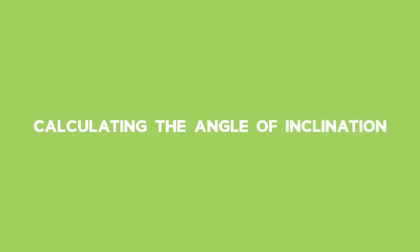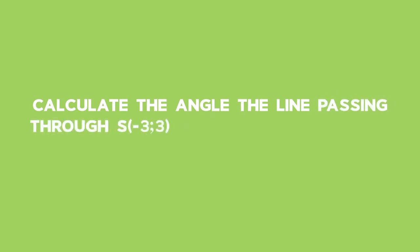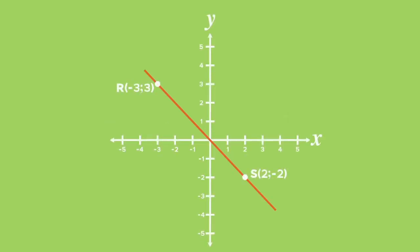Example 1: Calculating the angle of inclination. Calculate the angle the line passing through the points S(-3, 3) and R(2, -2) makes with the positive x-axis. Start by making a rough sketch and name the angle the line makes in the direction of the positive x-axis theta. To calculate theta, we need the gradient of the line passing through points S and R.